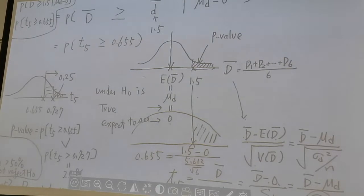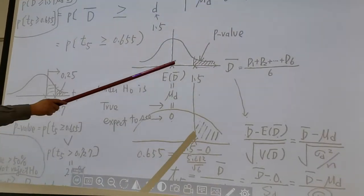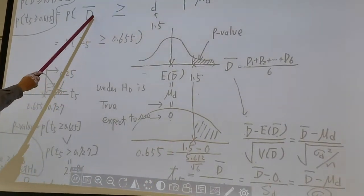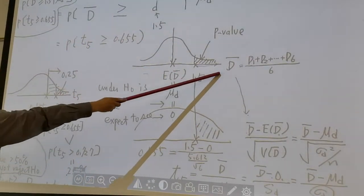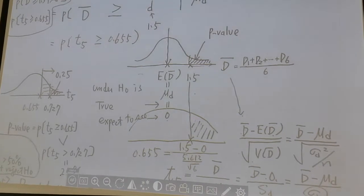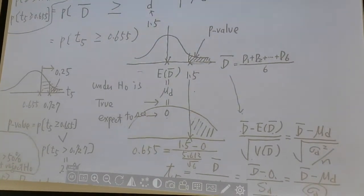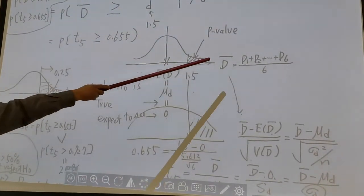Now, in order to make statistical inference, we need to know the sampling distribution of d-bar. And what's d-bar? D-bar is d₁ plus d₂ plus all the way up to d₆ divided by 6. And d-bar follows normal.